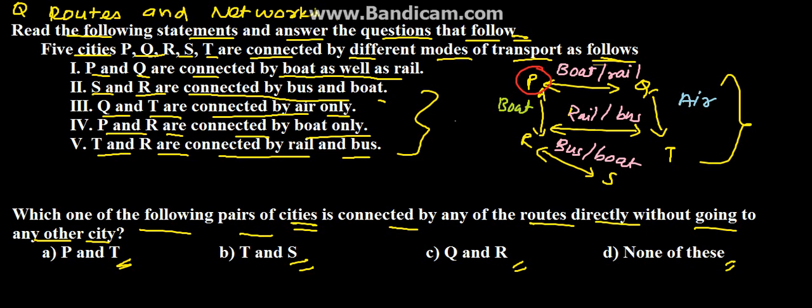Our first option is P and T. Here we have P and here we have T. In between they have either Q or R, so this one does not work.